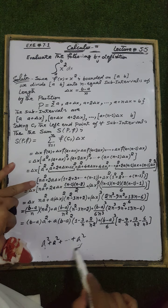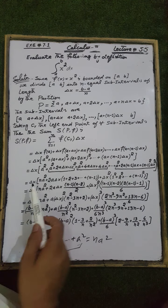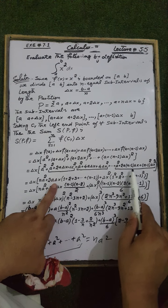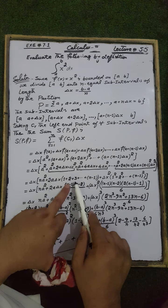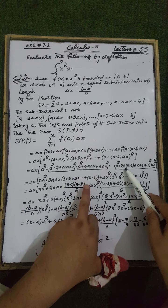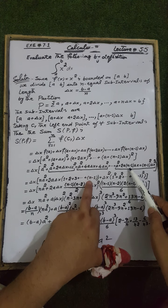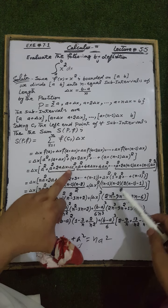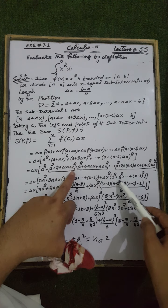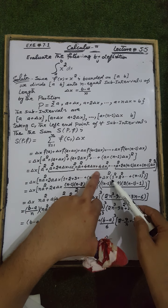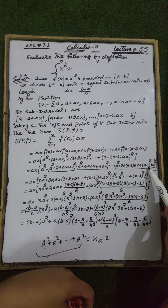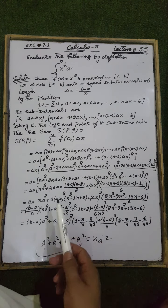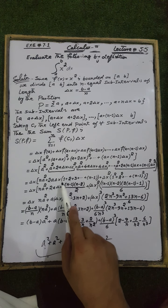Grouping like terms: the a² terms sum to n·a². The 2aΔx terms factor out 2aΔx, giving 2aΔx·(1 + 2 + 3 + ... + (n-1)). The Δx² terms factor out Δx², giving Δx²·(1² + 2² + ... + (n-1)²).